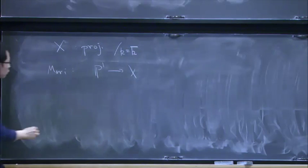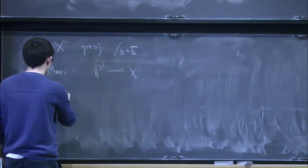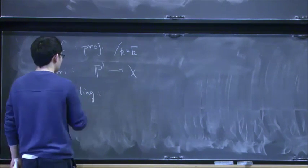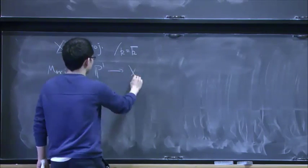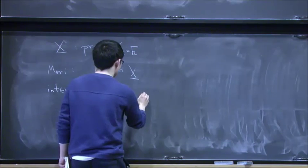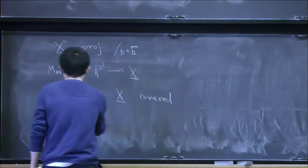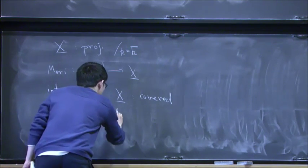And Murray told us that maybe an efficient way of studying the geometry is to understand rational curves. So an interesting case is the extreme case that X is covered by lots of P1s.